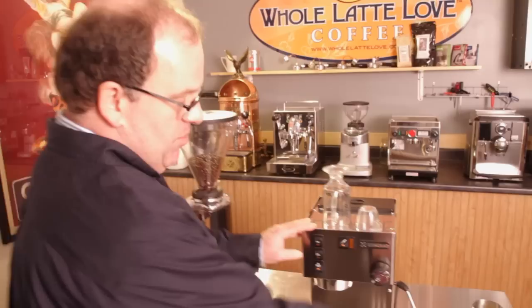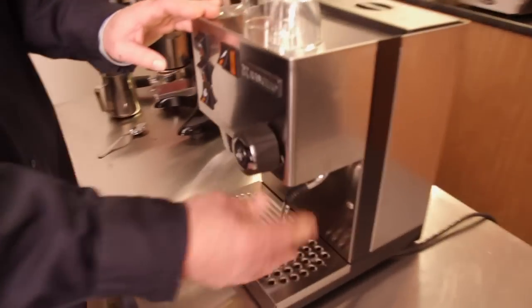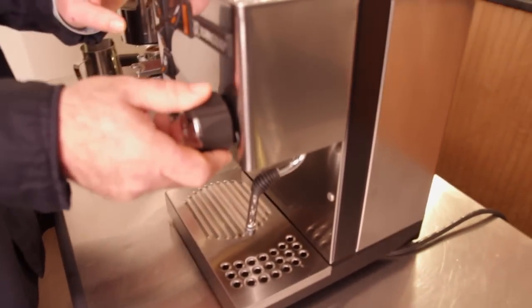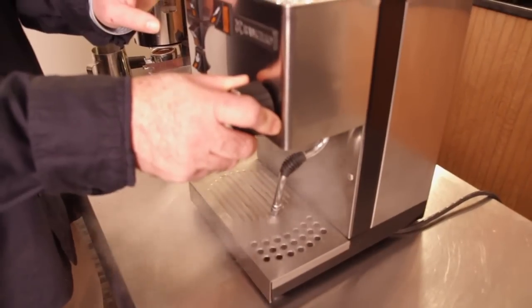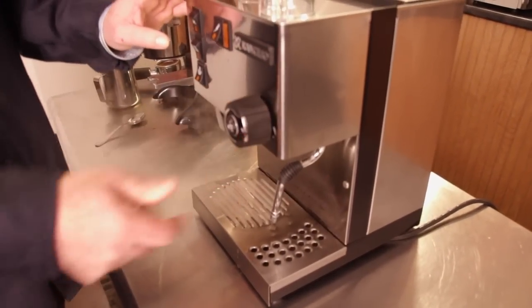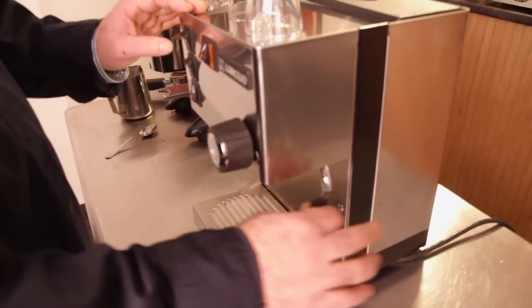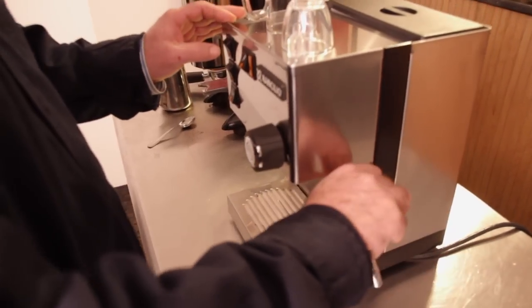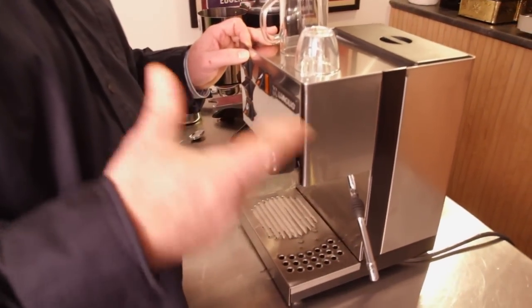To steam my milk, I'm going to purge my steam wand a little bit. A little bit of hot water and steam will come out. Okay, now I'm all set to steam. When we make cappuccino milk, what we really want to focus on is ensuring that we create foam.